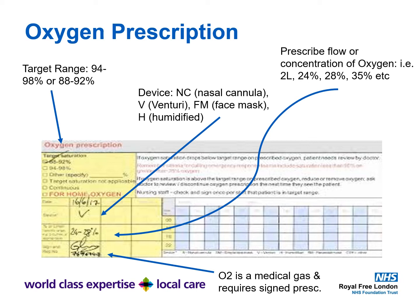To prescribe oxygen, this is a snapshot of an oxygen prescription chart from the Royal Free Hospital. You prescribe the target range — either 94 to 98% or 88 to 92% — along with the date and the device: NC for nasal cannula, V for Venturi, FM for face mask, and H for humidified. You then prescribe the flow or concentration — for example, 94 to 98%, NC, 2 litres. As a medical gas, it requires a signed prescription like any other medication.